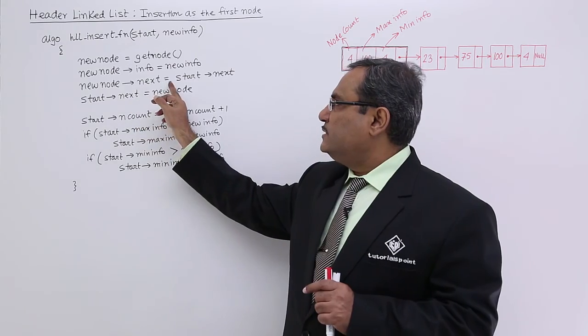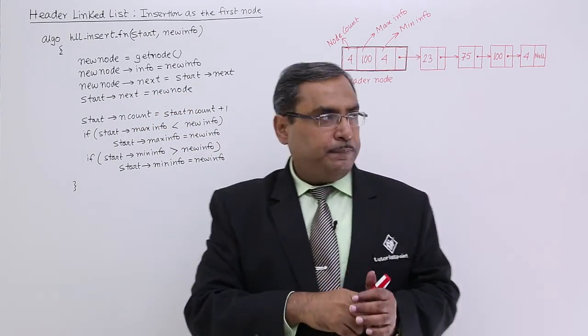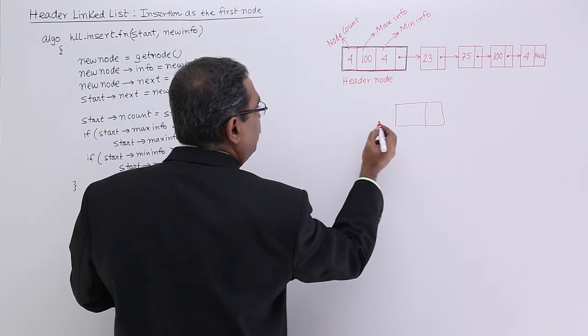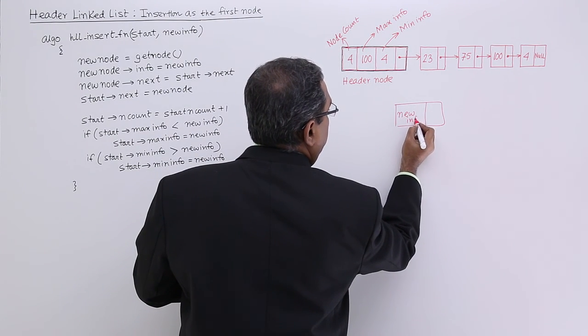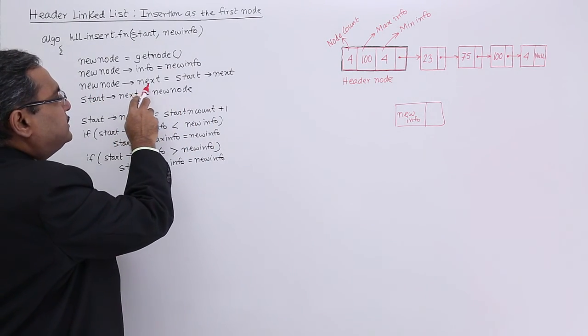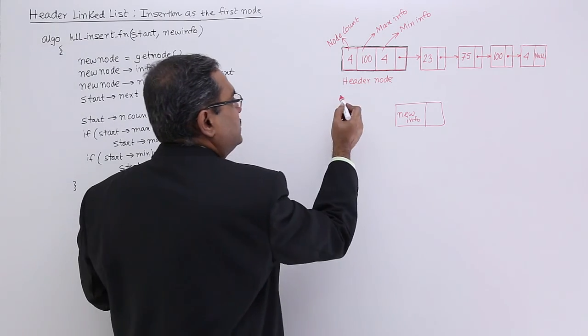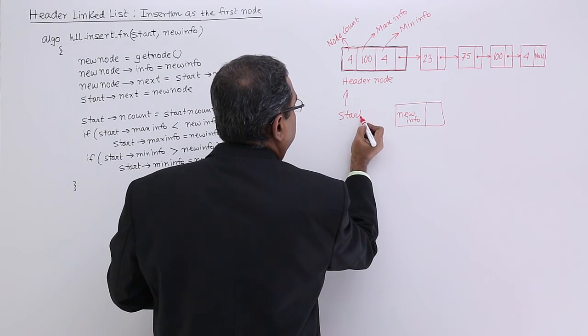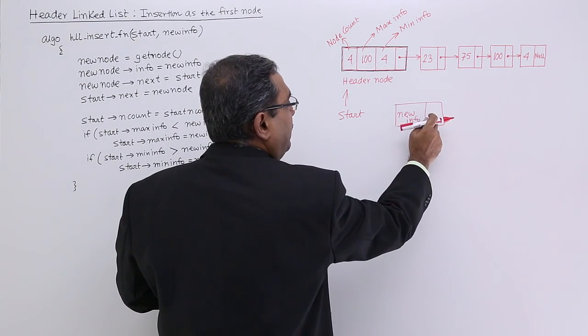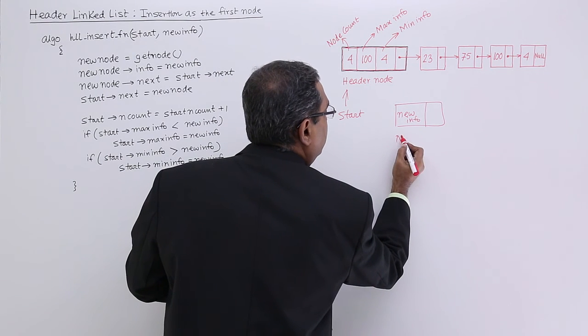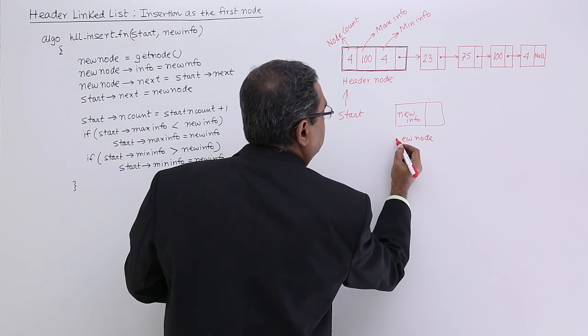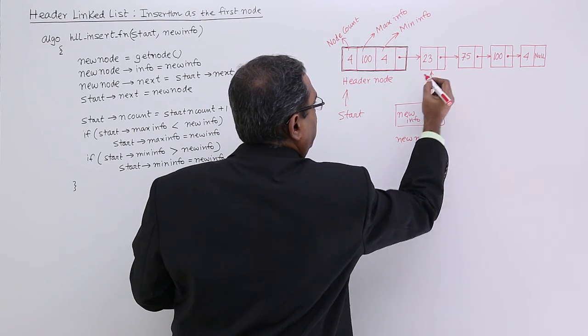So new node next equals start next. That means the new node, let us suppose it is a new node and here the new info has been put. Now it is writing this one. You see, new node next equals start next. So that is my start. So start next means this one. So that will be coming to this new node, so it will be pointing to this particular node.